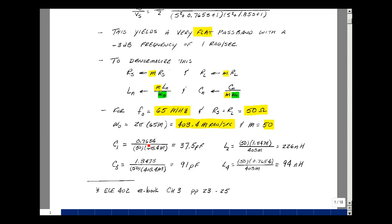So our capacitor that was 0.7654 now becomes 37.5 picofarads. The 1.8478 capacitor becomes 91 picofarads. The 1.8478 henry inductor becomes 226 nanohenries. And lastly, the 0.7654 henry inductor becomes 94 nanohenries.